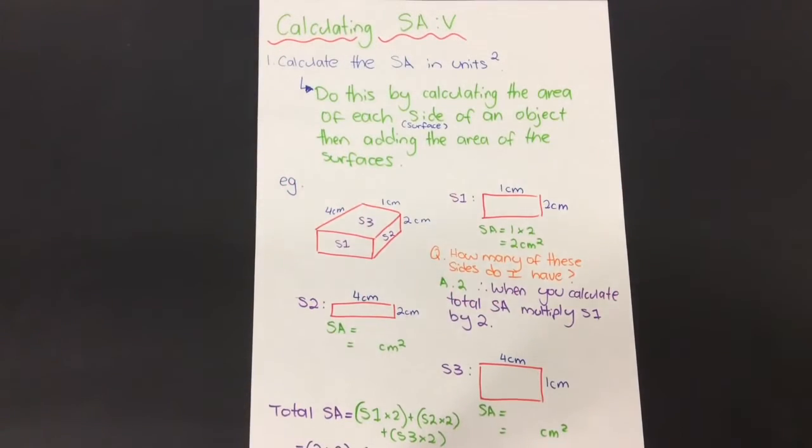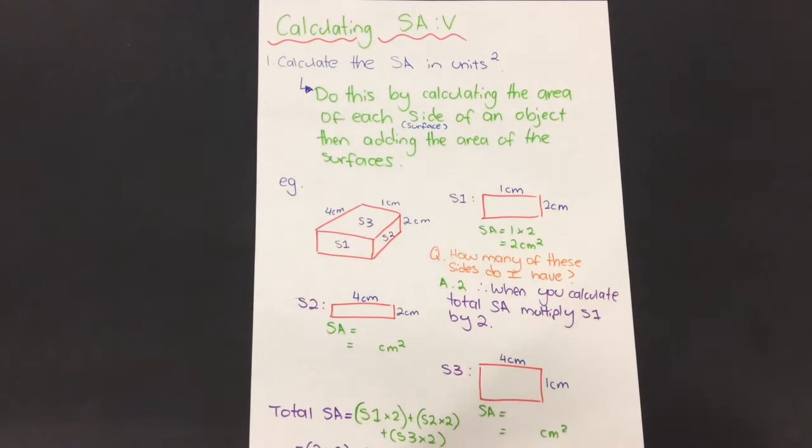Okay, now to calculate the surface area to volume ratio, do this by calculating the surface area first in units squared. To do this, you calculate the area of each side or surface of an object and add the area of those surfaces together to find the total surface area.